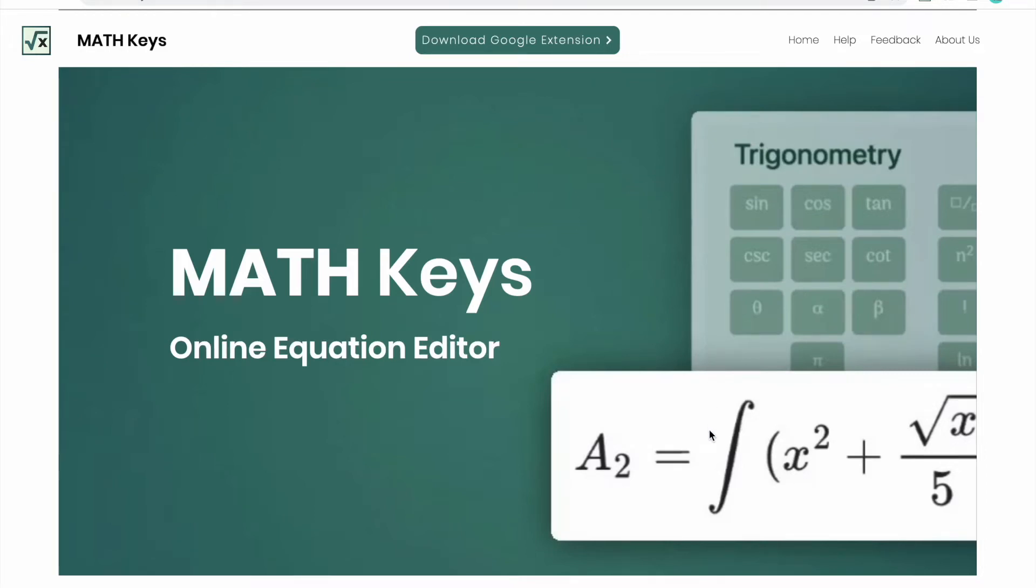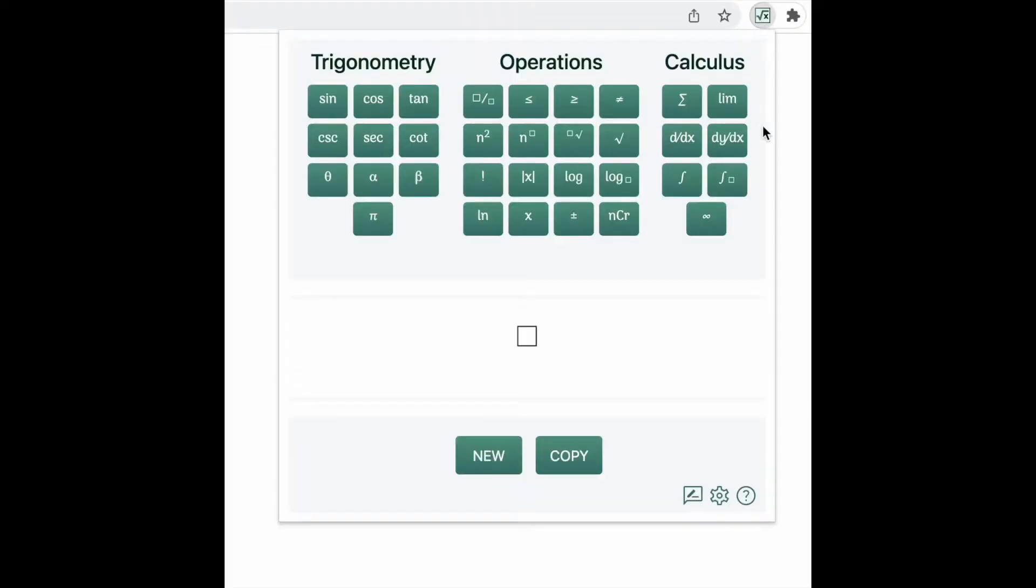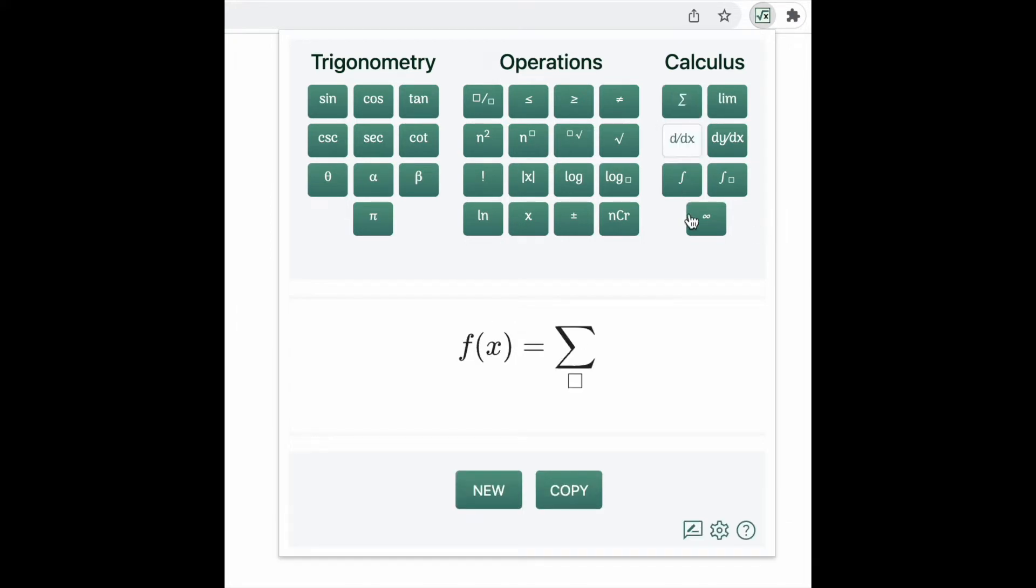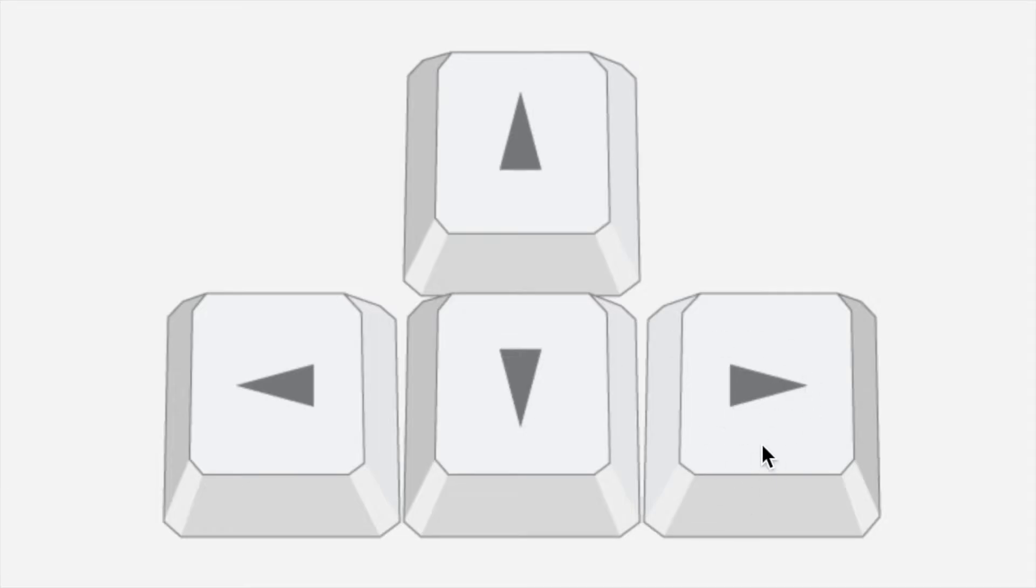Thank you for downloading MathKeys. Here's a tutorial on how to use our extension. Say you want to make this equation. Use your computer keyboard to start writing the equation. Type f of x equals. Then press the sigma button in the calculus section. The square on the screen shows where your cursor is. Start by typing i equals zero in the bottom of the sigma. To get to the top of the sigma, click the forward arrow key on your computer keyboard. Do not press the up or down arrow to move the cursor.